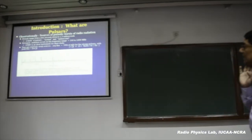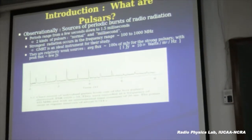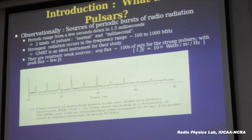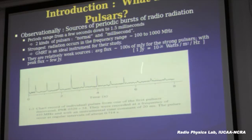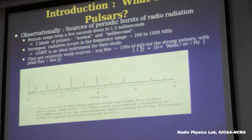What we see is periodic bursts of radio radiation. The range of periods is from a few seconds down to about 1.3 milliseconds — the fastest known rotating neutron star. They fall into two categories: normal period pulsars with periods of hundreds of milliseconds to a few seconds, and millisecond pulsars with periods of the order of milliseconds to tens of milliseconds. They typically radiate strongly from about 100 megahertz to a gigahertz, well suited to be studied by low frequency instruments like the GMRT.